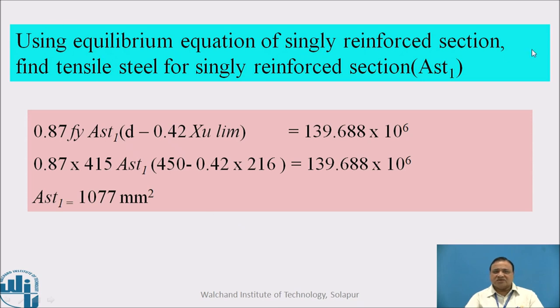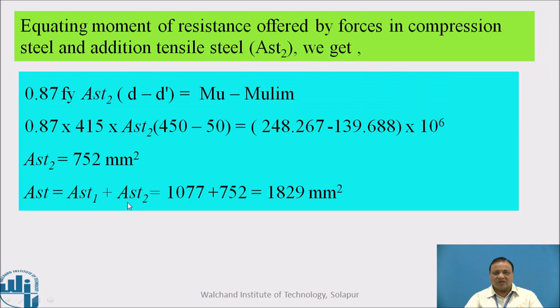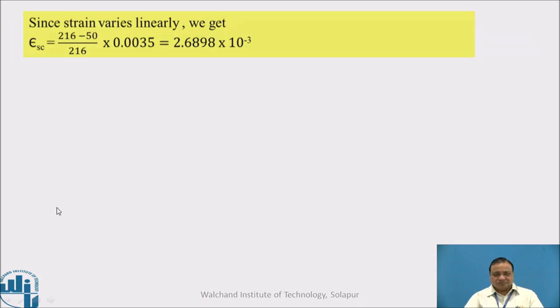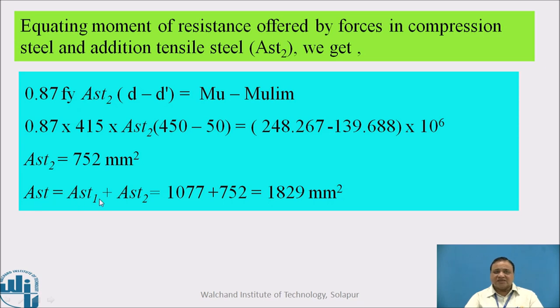Using equilibrium equation of a singly reinforced section, find first the steel AST1. So 0.87 FY AST1 × (D - 0.42 XU limit) equals MU limit. We get AST1 equals 1077 mm square. Equating the moment of resistance offered by force in compression steel and additional steel AST2, we get 0.87 FY AST2 × (D - D dash) equals MU minus MU limit. AST2 equals 752 mm square. Total steel AST is AST1 plus AST2.